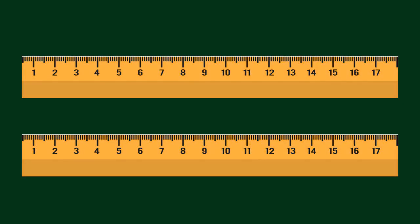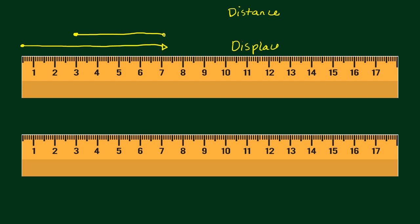To illustrate, suppose we have an ant that walks from here, stopped here at 7, and then went back up to here. Let us first compute the distance and the displacement, because we will be needing this for the speed and velocity. All in all, this travel took 10 seconds.